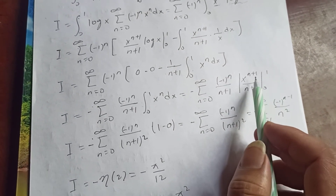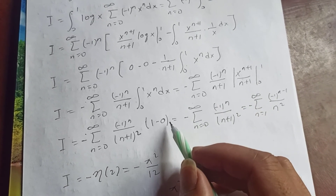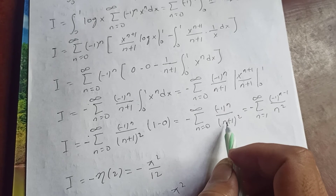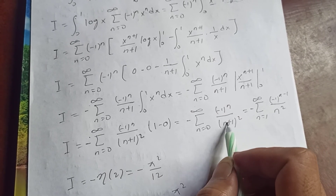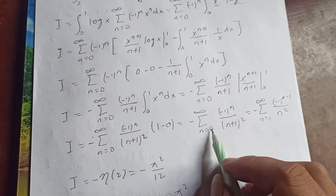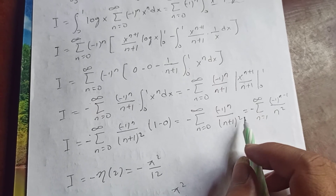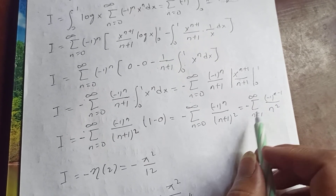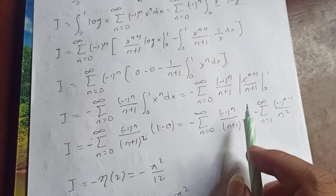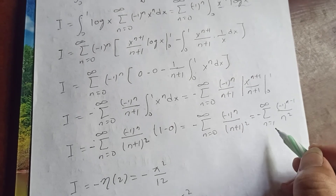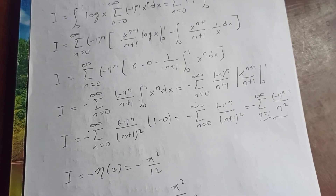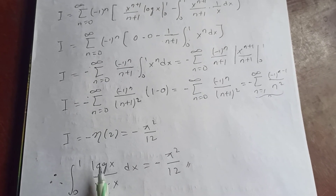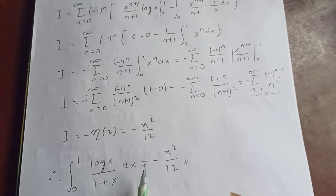Substituting the limits, 1 to any power is 1 and 0 to any power is 0, giving minus the sum from n equal to 0 to infinity of (−1)^n over (n+1)². Re-indexing by letting n start from 1, this becomes negative the sum from n equal to 1 to infinity of (−1)^(n−1) over n². This summation is exactly the Dirichlet eta function η(2), which equals π²/12. Therefore, the integral from 0 to 1 of log(x) over (1 + x) dx equals negative π² over 12.